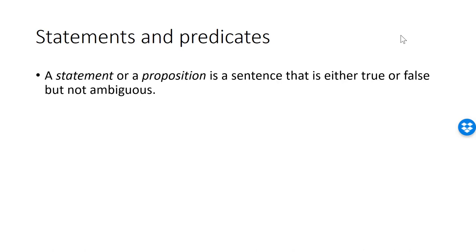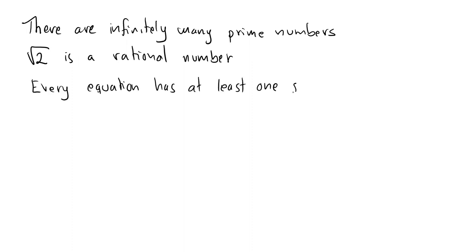Here are some actual statements that make sense in mathematics. There are infinitely many prime numbers is a true statement. Square root of 2 is a rational number is a false statement. Every equation has at least one solution is another false statement.